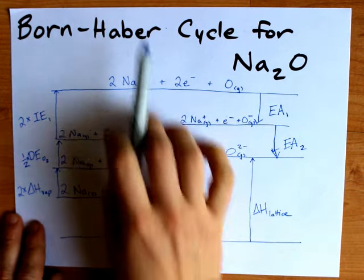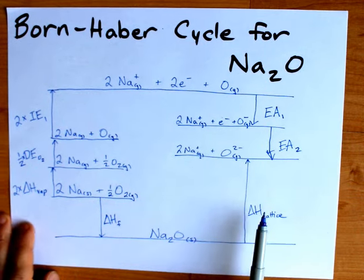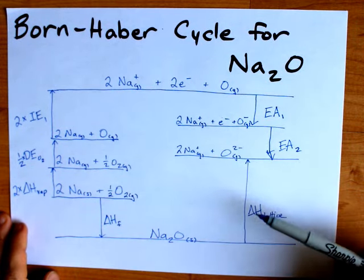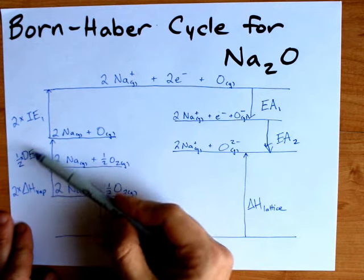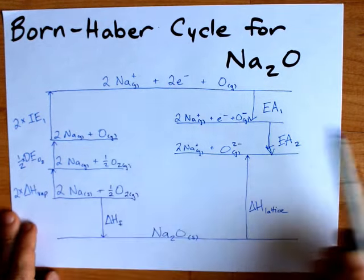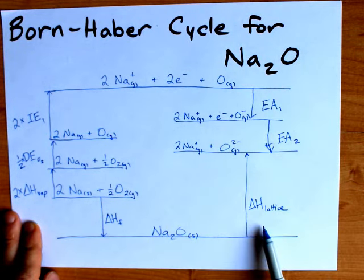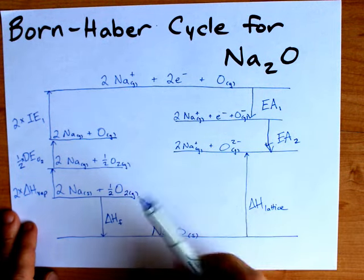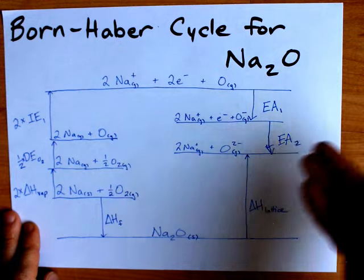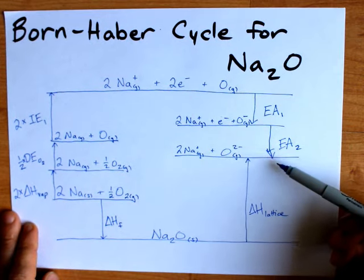Now, some teachers will ask you to calculate one of these values based on all the others. The way I personally do that is to convert them all to positive numbers, do the multiplications that I need to do, and then I can just add up all the numbers on this side, add up all the numbers on this side, leaving one of them as X, an unknown, and then solving for X. I can determine whether it's positive or negative later, knowing whether or not it's an endothermic or an exothermic process.